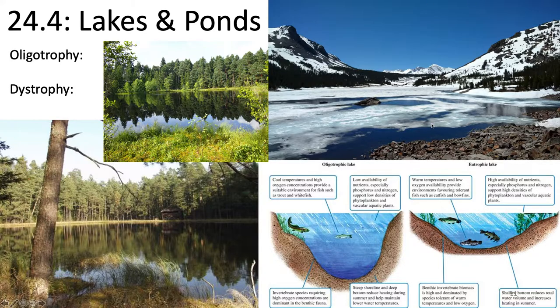Oligotrophic lakes have little organic matter for decomposers, so they tend to have higher oxygen content in the hypolimnion — the lower layer of the lake. Abundance of organisms can be low, but they can host high diversity because of the higher oxygen content. This is a picture of a lake near Tuolumne Meadows in Yosemite National Park, taken while checking if snow had melted enough for bumblebees.